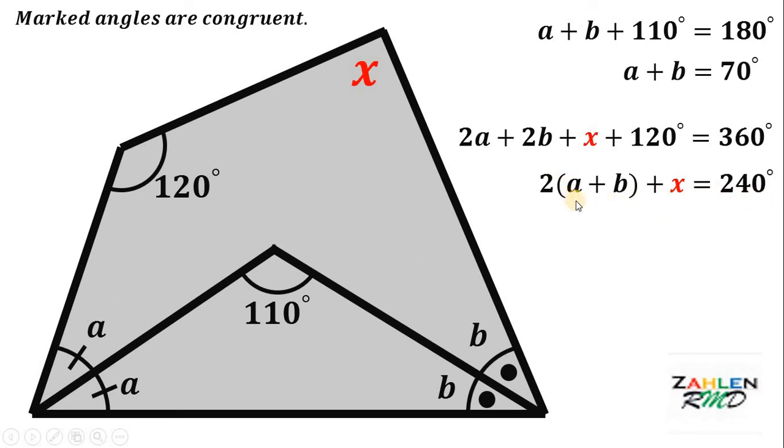Now, take note that a plus b is equal to 70 degrees. Therefore, we can replace a plus b with 70 degrees and 2 times 70 degrees will give us 140 degrees.